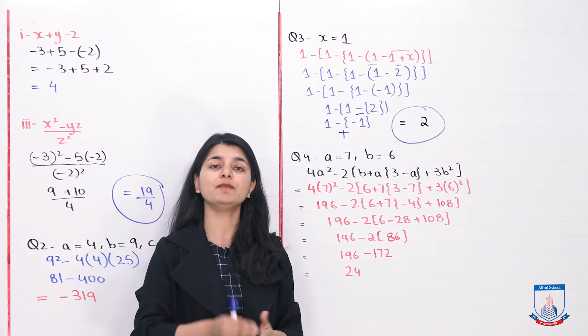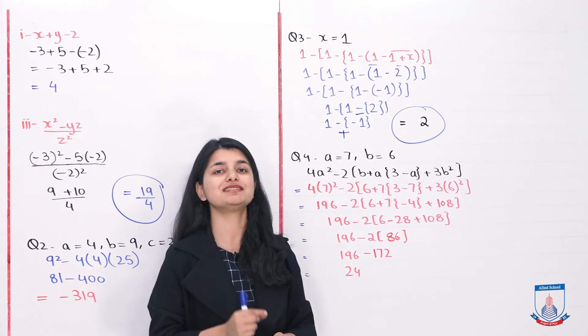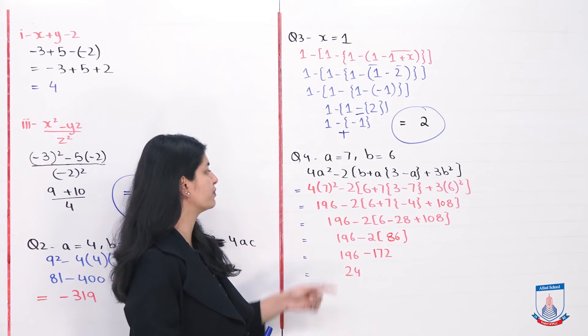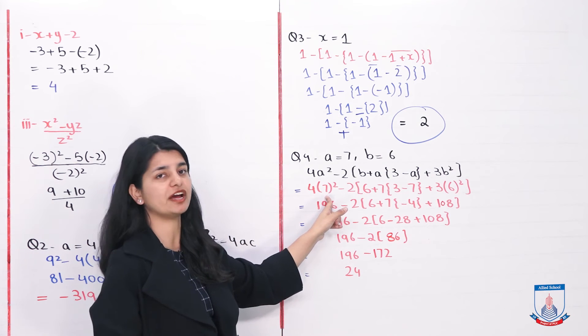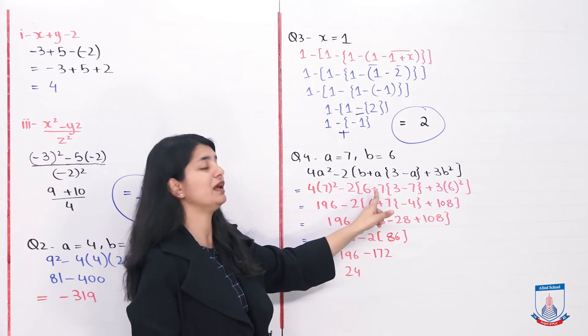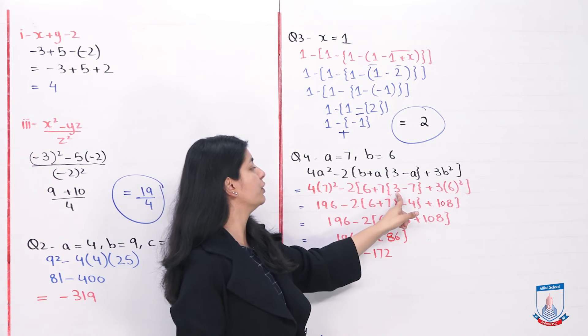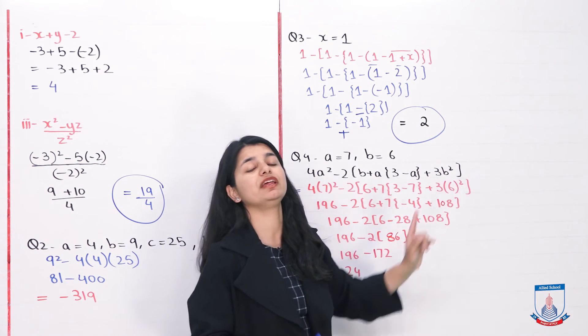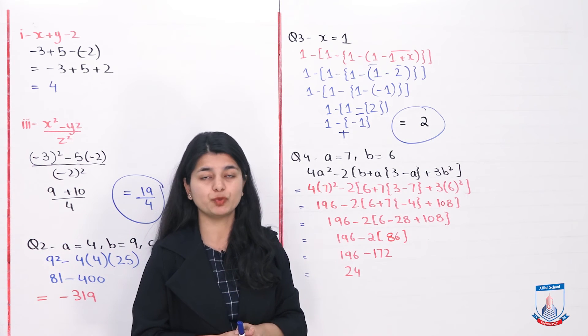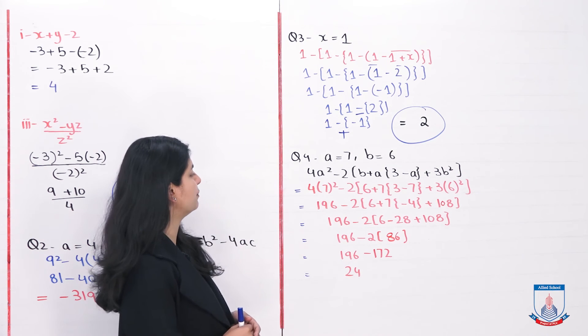For evaluation, first we add numbers in place of variables. 4a squared, a value is 7, so 4 times 7 squared. 2 into b plus a is 6 plus 7. 3 minus a is 3 minus 7. Plus 3b squared is 3 into 6 raised to power square. After doing all this, next step is to solve them.